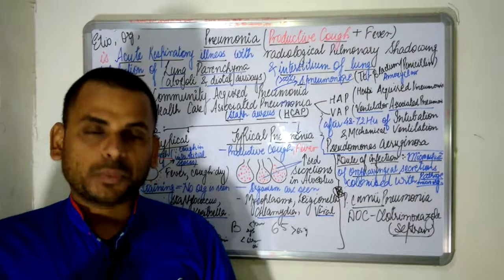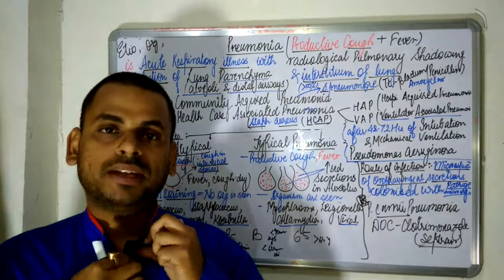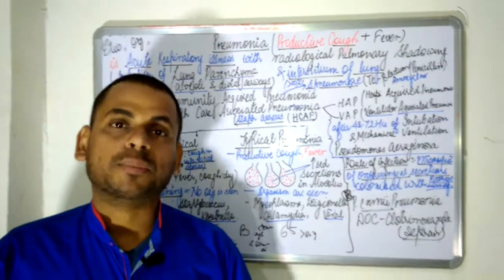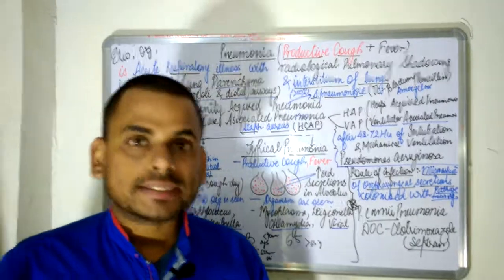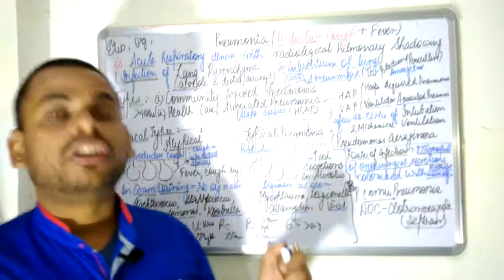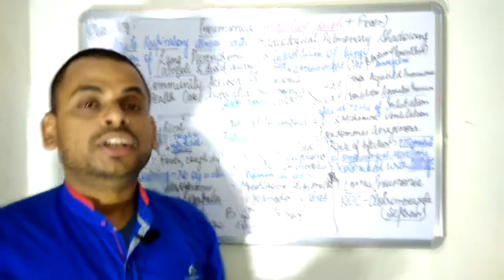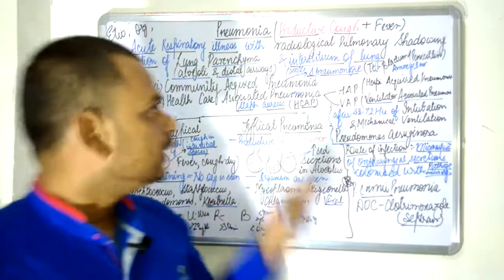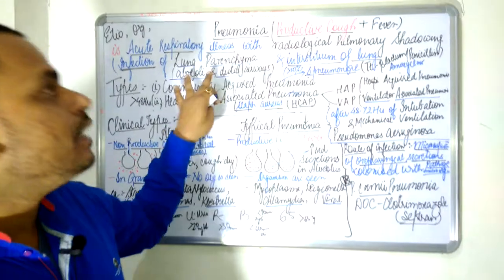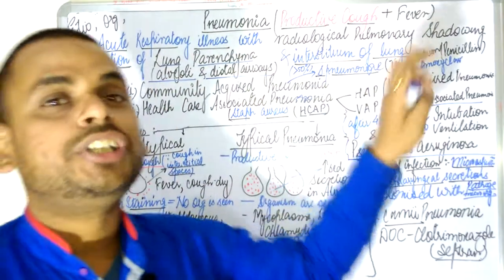Welcome to another session of the pathology or medicine series. Today I'll be discussing pneumonia. Pneumonia is particularly the infection of the lung parenchyma and the interstitium of the lung. The lung parenchyma comprises of two things: the alveoli and the distal airways. These two things comprise the lung parenchyma and the interstitium of the lung.